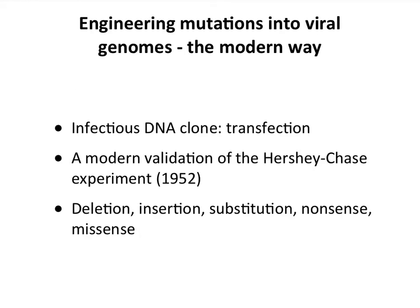Now what we do is use what are called infectious DNA clones. You take the viral genome — whether DNA or RNA — make a DNA copy of it, amplify it in a bacterial plasmid to get lots of it, then put that DNA into a cell. You transfect the cell and the cell makes infectious virus. This is a modern validation of Hershey and Chase's experiment — it shows DNA is the genetic material. You can make all kinds of changes to the DNA and introduce specific mutations or make recombinant viruses. People can be very afraid of this, but we can modify viruses at will.